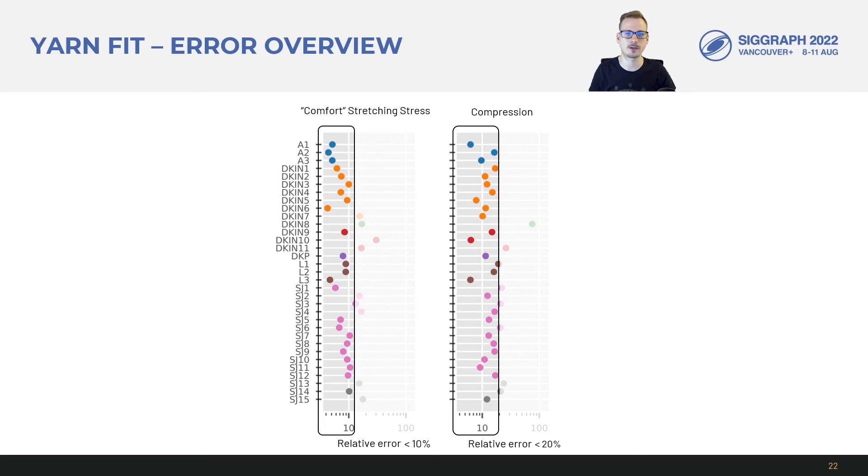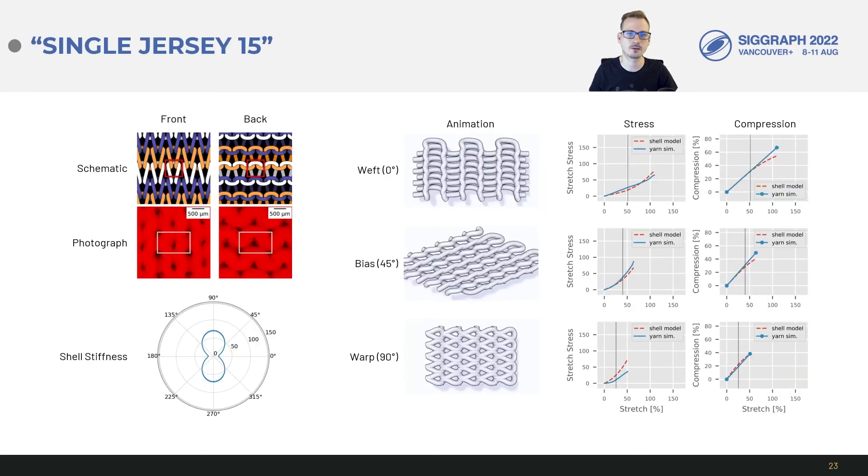Now we'll compare some of these fabrics. First let's walk through this single jersey 15 as an example. As we see from the topology here in the schematic and photographs this pattern is the basic plain knit also called stockinette or jersey and this particular fabric is made from a simple polyester yarn.